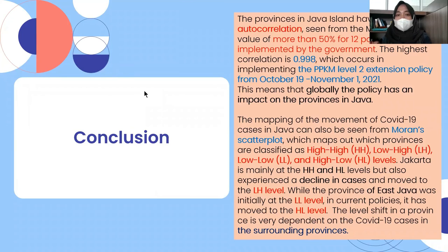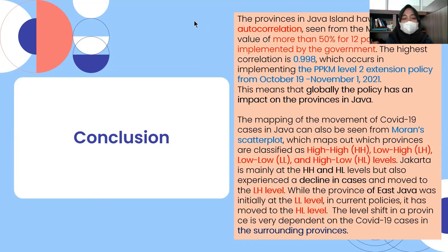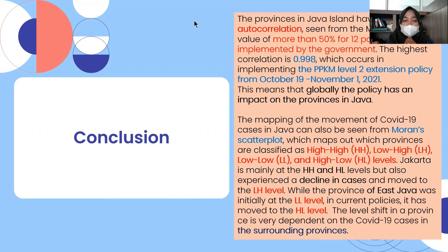In conclusion, the provinces in Java Island have a high spatial autocorrelation, seen from Moran's Index values above 50% for 12 of the government-implemented policies. The highest correlation is 0.998, occurring during the PPKM Level 2 extension from October 19 to November 1, 2021, showing the policies had a global impact on Java's provinces. From the Moran scatter plot, Jakarta is mainly classified as High-High and High-Low but also experienced a decline moving to LH, while East Java moved from Low-Low to High-Low as its case levels shifted.